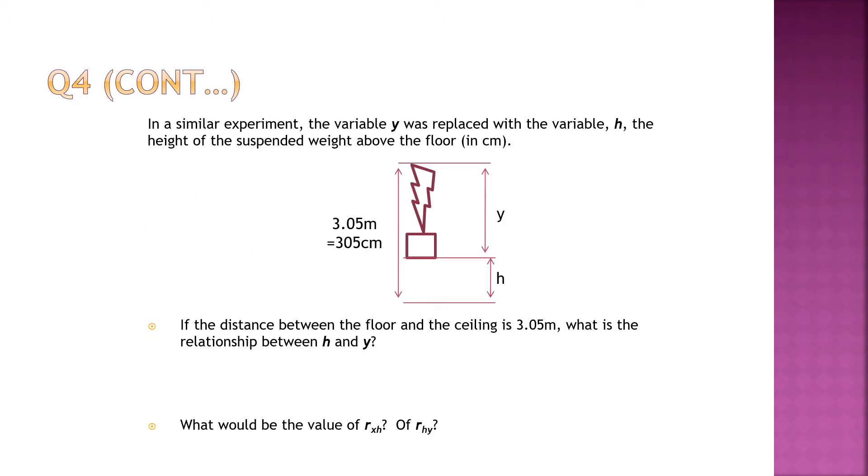In a similar experiment, the variable y was replaced with the variable h. So what is happening? The side of the suspended width above the floor. Meaning just now, y is from the ceiling to the end. Do you see the y there, the picture? It's from the ceiling to the weight. H is from the floor to the weight. So logically, h plus y is 3.05 meters, right?